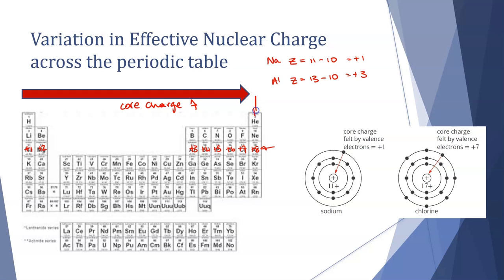When we look down a group however, groups will have the same core charge. Elements that are in the same group will have the same core charge and this will help us explain a number of the trends that we see in both the physical and chemical properties of the periodic table, which we will learn about in the next two videos.